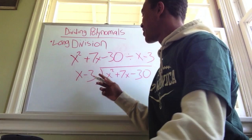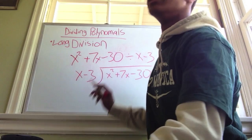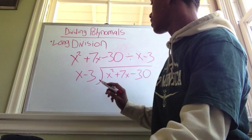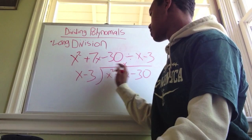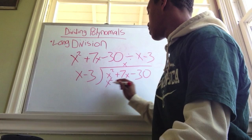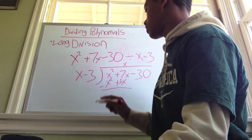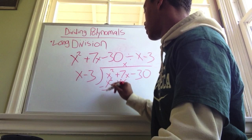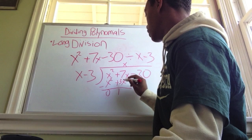In order to do this, you have to find out how many times x goes into x squared — you're going to need an x above. So you put an x right here. Now you multiply the monomial by the polynomial: x times x equals x squared, and x times negative 3 equals negative 3x. You're going to subtract, and also flip this sign in the middle.